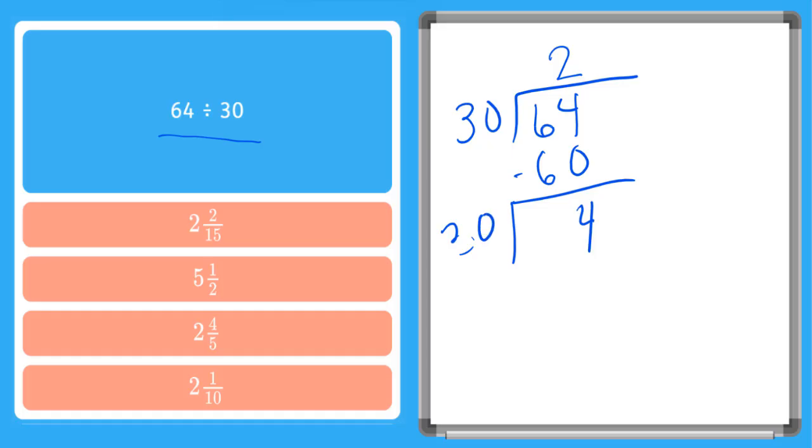So now it says 30 goes into 4 how many times? Well, we know it doesn't go in an equal time. So traditionally I would write this as my remainder of 4. But now I'm writing this as a fraction. So what I'm actually going to have is I'm going to have my 2 remainder 4 is going to be rewritten as a fraction. So it'll be 2 is going to be 4 on top of whatever I'm dividing by, which is my 30.